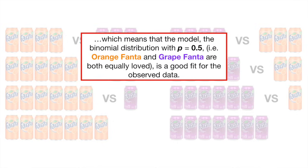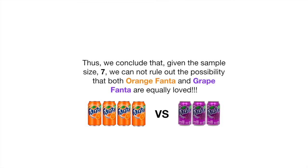Which means that the model — the binomial distribution with p equals 0.5, i.e. orange Fanta and grape Fanta are both equally loved — is a good fit for the observed data. Thus, we conclude that given the sample size of 7, we cannot rule out the possibility that both orange Fanta and grape Fanta are equally loved.